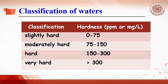For example, water with hardness of 0 to 75 ppm is defined as slightly hard. In today's experiment, students will have to report and classify the hardness of an unknown water sample.